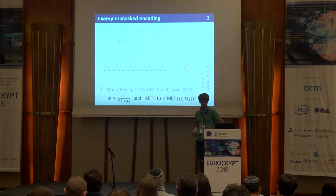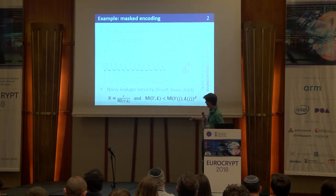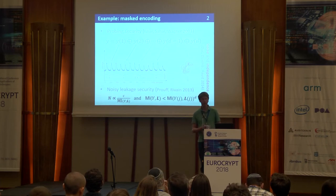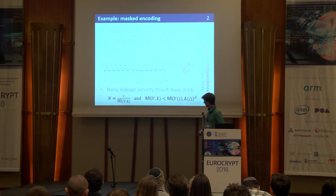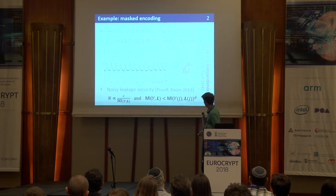Concretely, we can use standard formulas: the number of samples needed to recover a key is inversely proportional to the mutual information between the target variable Y and the matrix of all leakage samples. This can be bounded by the mutual information for one share and the corresponding leakages raised to the power D, which is of course much more convenient.